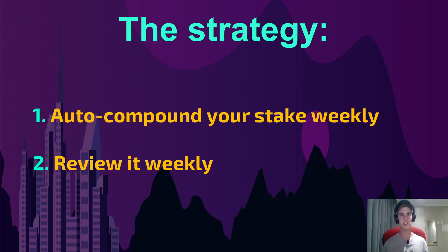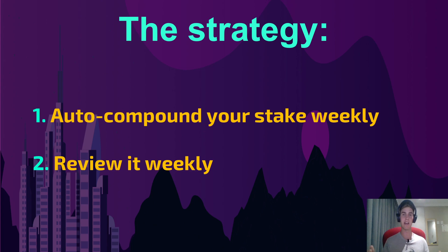In brief, the strategy is quite simple. You auto-compound your stake weekly, and you review it weekly. Let's say you auto-compound every Sunday — you leave your stake for a week to grow, and then let's say you've got 0.1 of a coin extra for that week. You take that and stake it again, so now your stack is 1.1. The following week it compounds on 1.1. You can choose to auto-compound daily or weekly — weekly is nice because you just do it on the weekend.